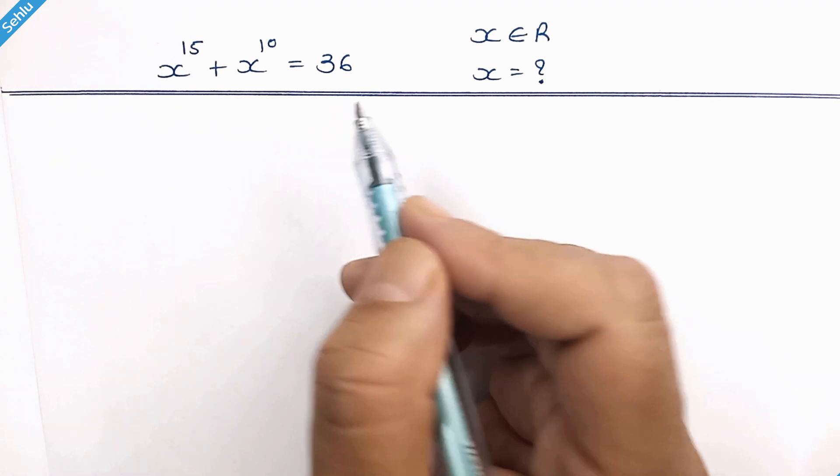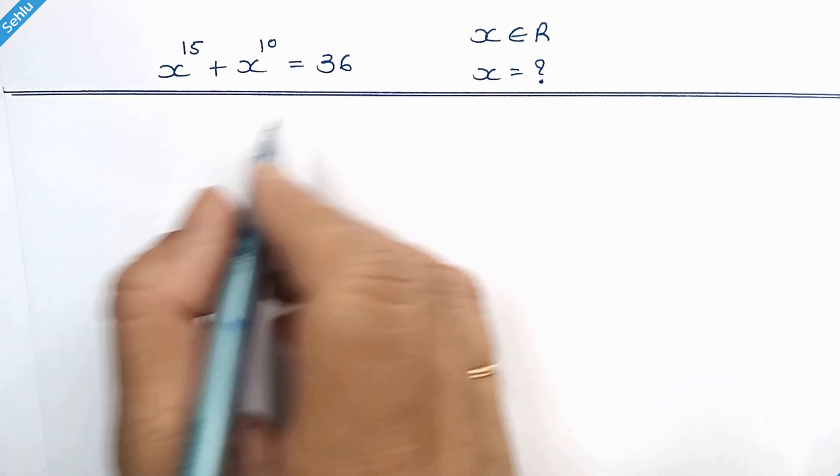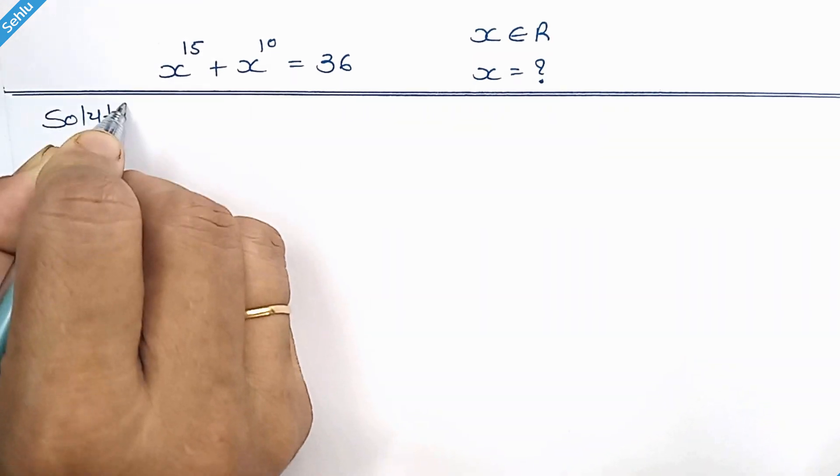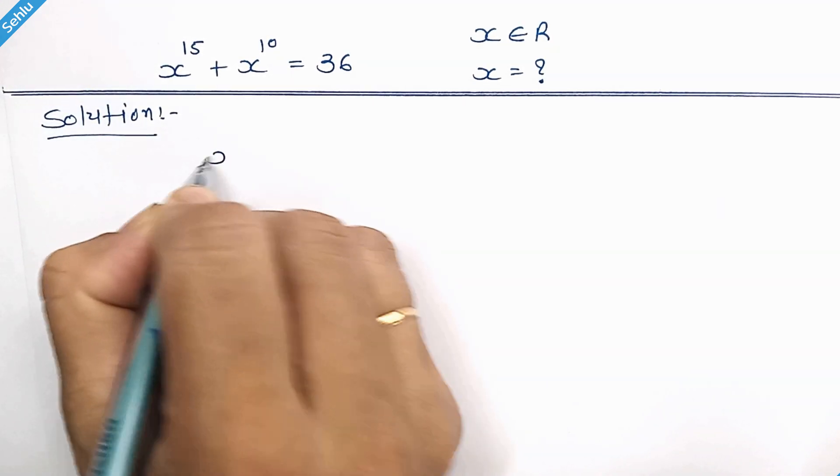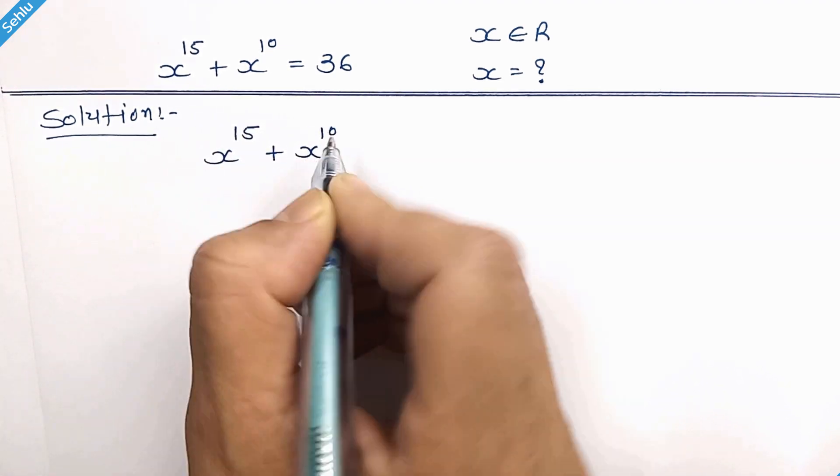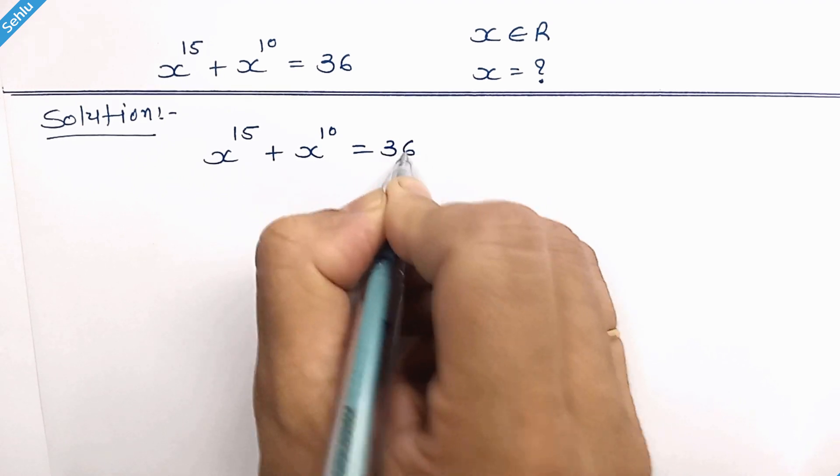Hello everyone. Here x is a real number. Let's begin to solve for x. The question is x to the power 15 plus x to the power 10 is equal to 36.